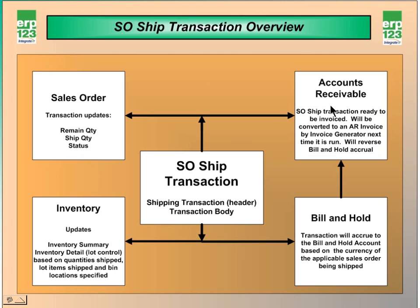The SO ship transaction creates a record that is ready to be invoiced, and this will typically be invoiced through the AR invoice generator module. At the time of shipment, an accrual will occur, and this accrual will be reversed once the invoice is created.